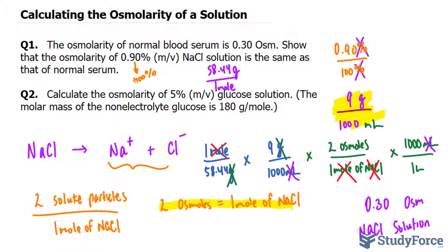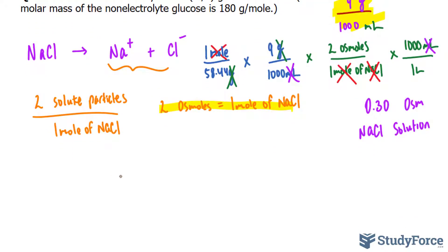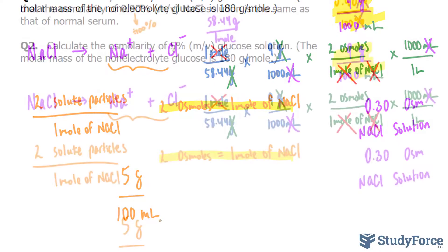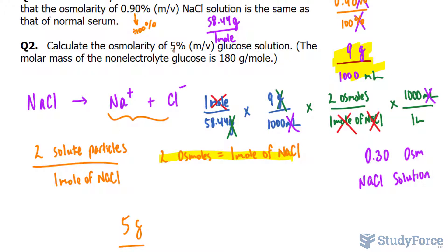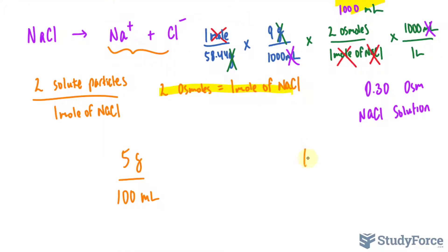That will be important later on. So let's get started. We have 5% mass per volume. 5% is interpreted as 5 grams of glucose per every 100 milliliters of liquid water. What we want is the osmolarity, which is a measure of the number of osmoles per 1 liter. That's what we're looking for.